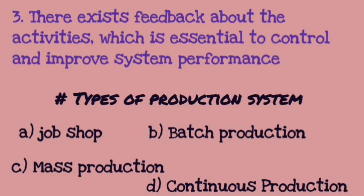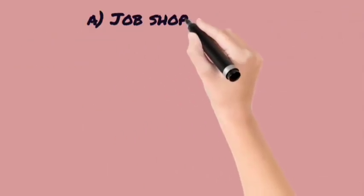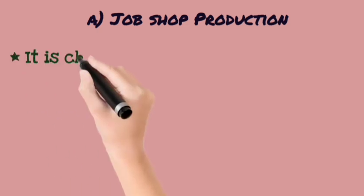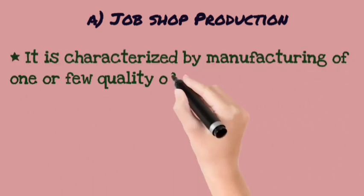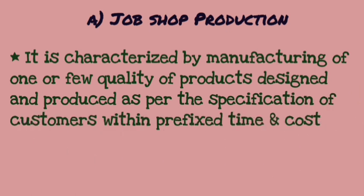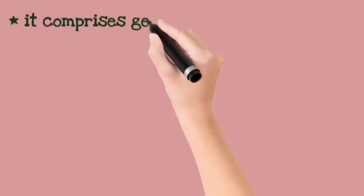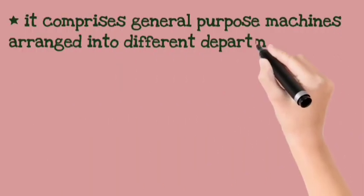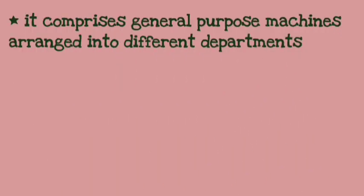In job shop production, products are made in few quantities but with a lot of variety, according to customer demand. The time is fixed, the cost is predefined, and the machines used are general purpose machines.